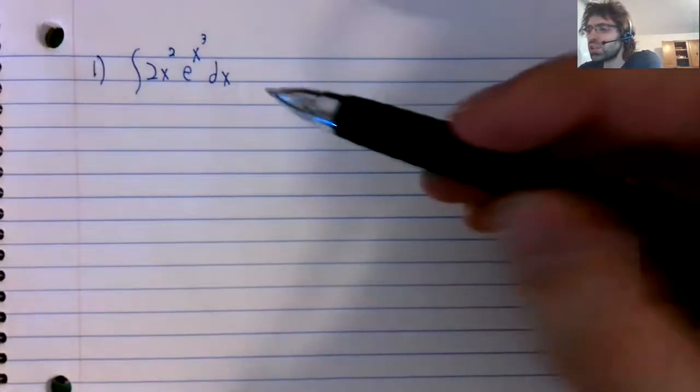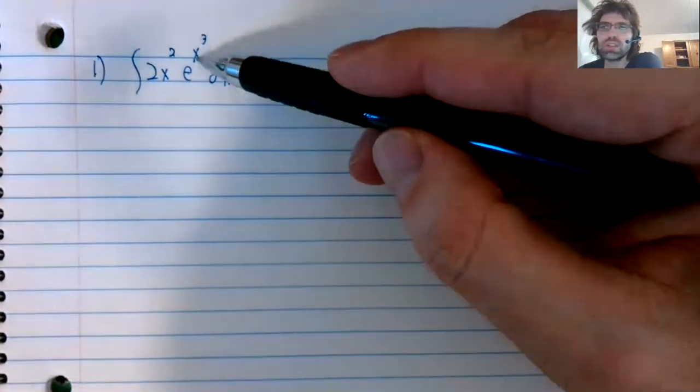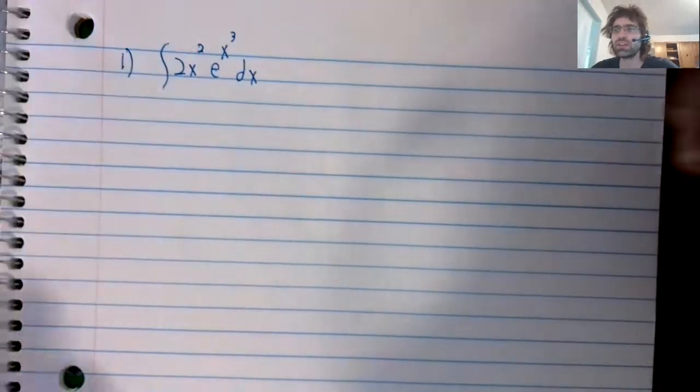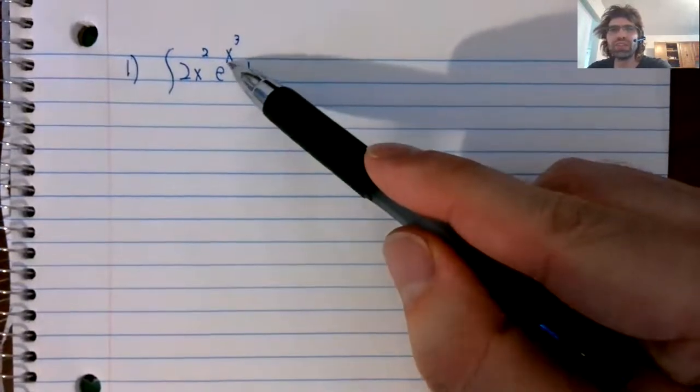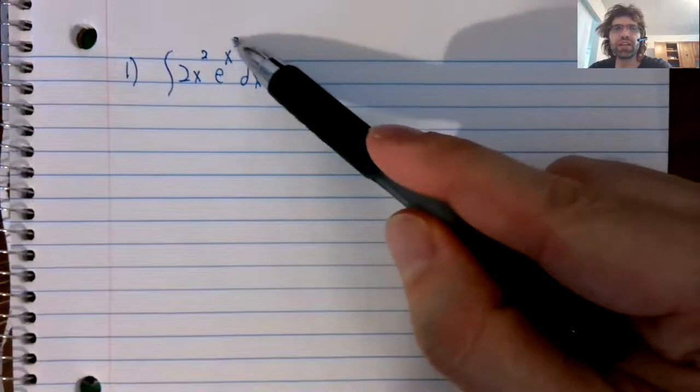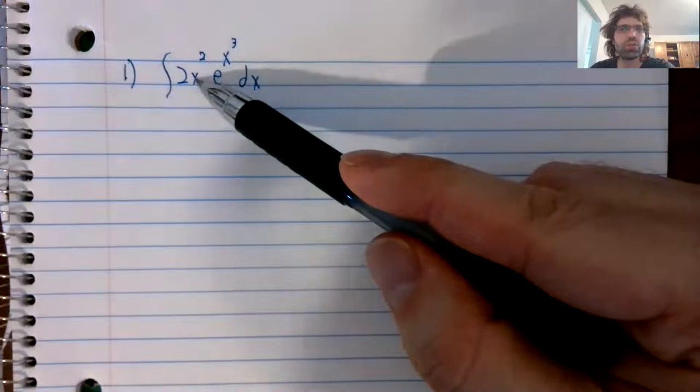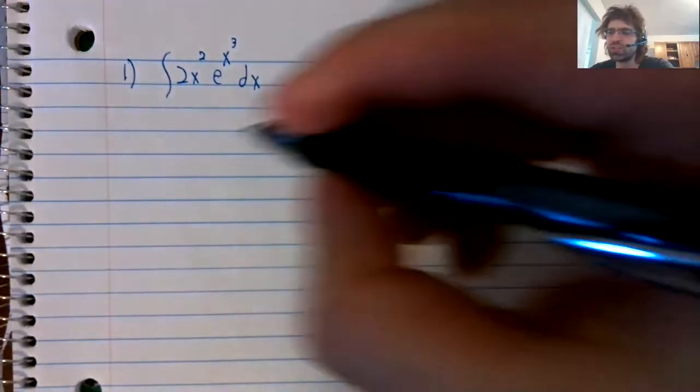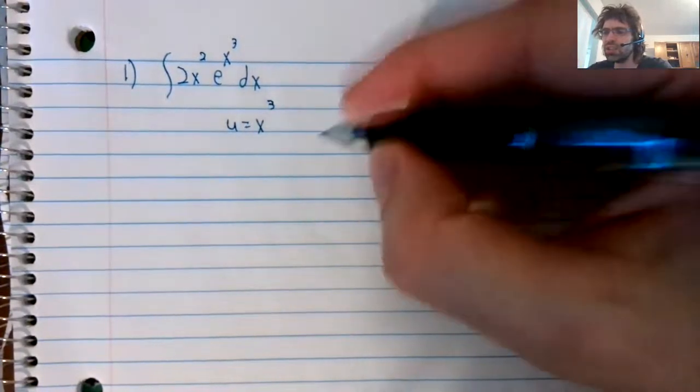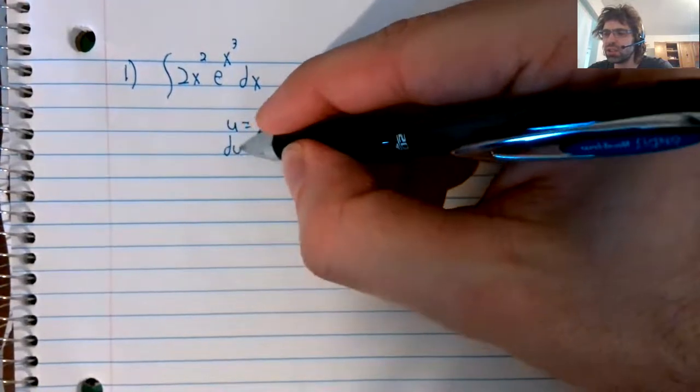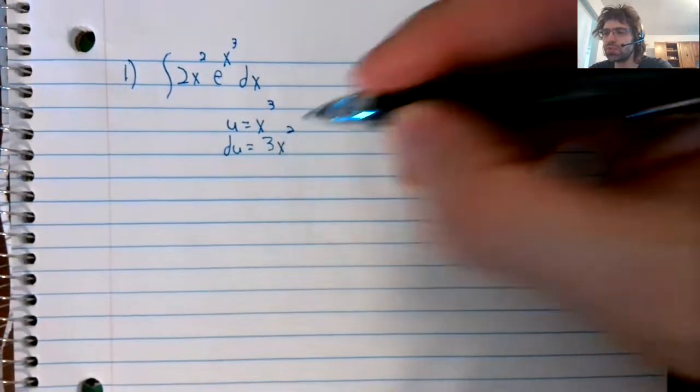So you see decomposition here, e to the x cubed, these are being composed together. And you see more or less the derivative of x cubed here. It's not quite, it's off by a constant, but it's very close. And these things together suggest to you, substitution.